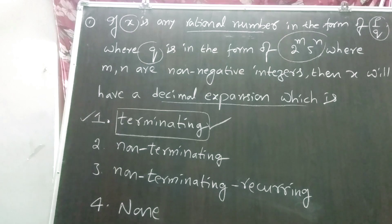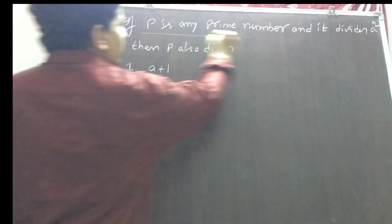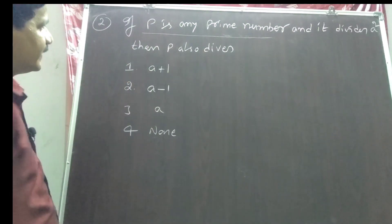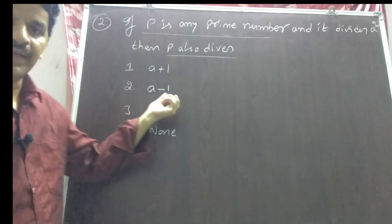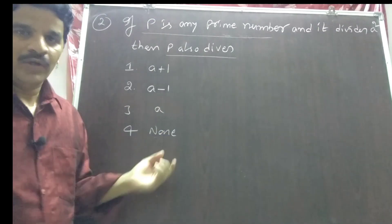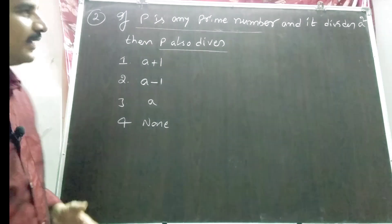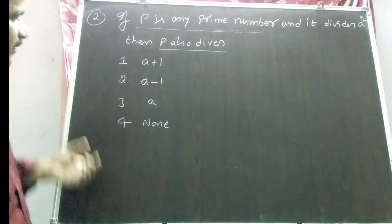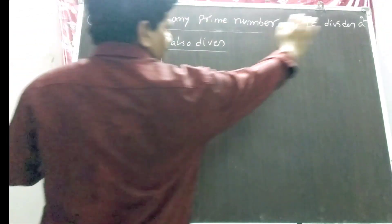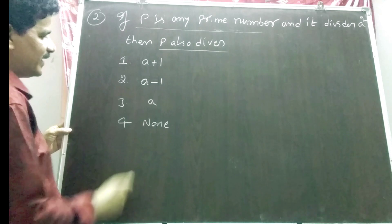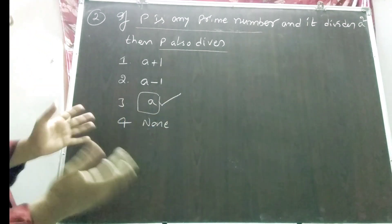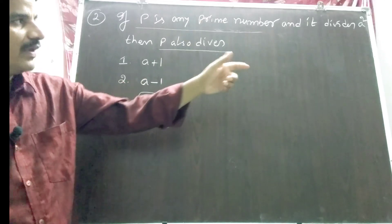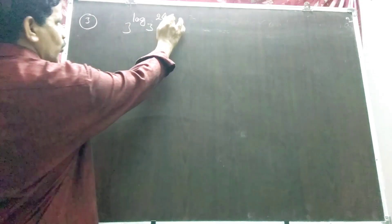Question 2: if P is any prime number and divides a², then P also divides — options are: a+1, a−1, a, or none. This question appeared in 2019 DSC and is repeated in 2018 DSC also. Whenever P is a prime number and divides a², then P also divides a. Option 3 is the right answer.